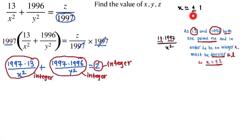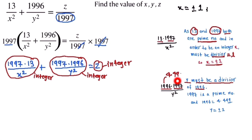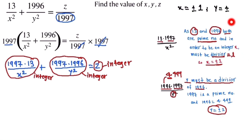Now we look at the term 1997 × 1996 / y². Since 1997 is prime, 1996 must be divisible by y². We can write 1996 = 4 × 499, so y² = 4, meaning y = ±2, because 2² = 4.